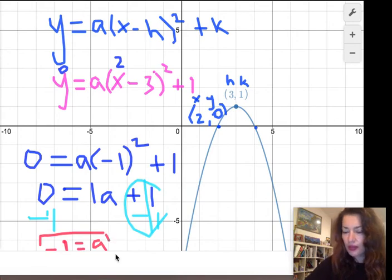And then once we know that the a value is negative 1, we can rewrite this whole equation and plug in our vertex. So the equation of this graph is y equals...